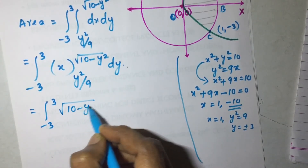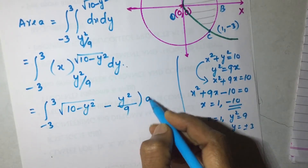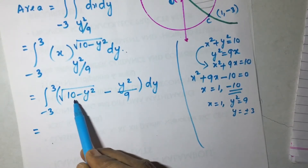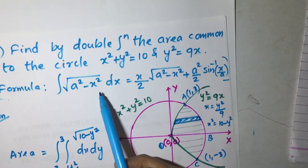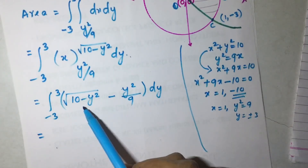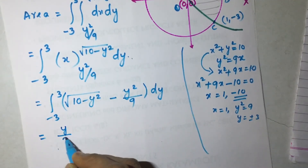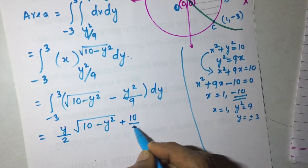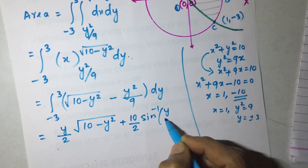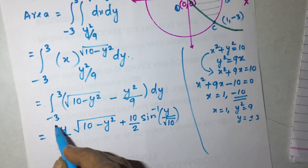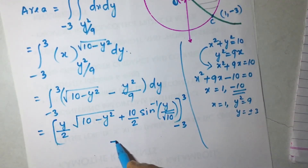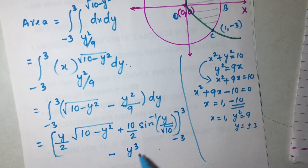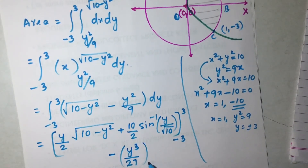Now we integrate from −3 to +3: [√(10 − y²) − y²/9] dy. For √(10 − y²), this is of the form √(a² − x²) with a² = 10. By the standard formula, the integral is (y/2)√(10 − y²) + (10/2) sin⁻¹(y/√10), evaluated from −3 to +3. The integral of y²/9 is y³/27, evaluated from −3 to +3.